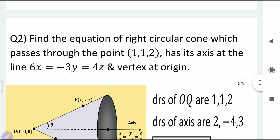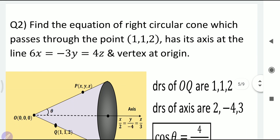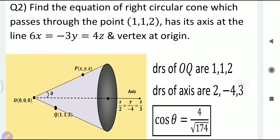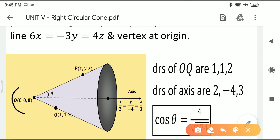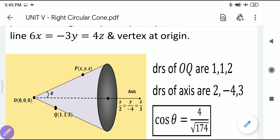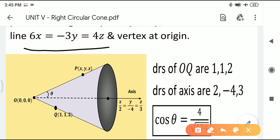Next problem: find the equation of the right circular cone which passes through the point (1, 1, 2), has its axis along the line 6x = −3y = 4z, and vertex at the origin. Again we need three things: vertex, DRs of axis, and semi-vertical angle. The vertex is the origin. The axis equation needs to be converted to standard form.